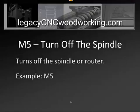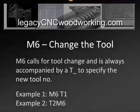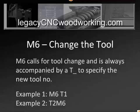M5 on the other hand doesn't do that — it simply turns the spindle or the router off. M6 is change the tool, and this again uses two words. The M6 calls for the tool change and it's accompanied by a T, which stands for the new tool number. So in this first example, M6 T1 means change to tool number one.